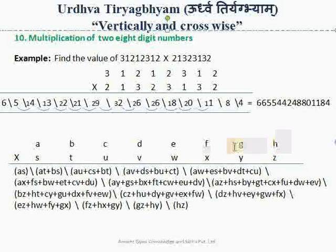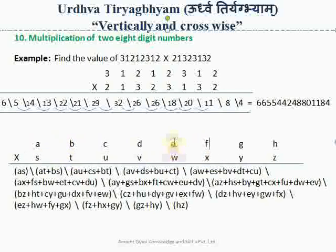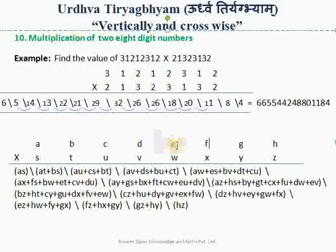Then, not considering the last two columns, we consider the A to F column: A into X plus F into S plus B into W plus E into T plus C into V plus D into U, and we write the result here.